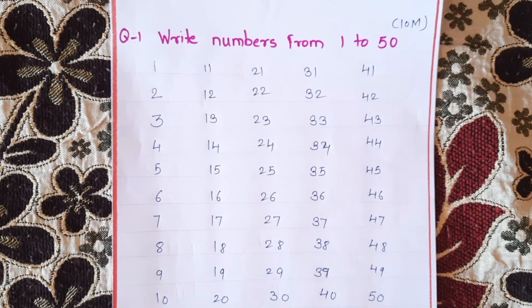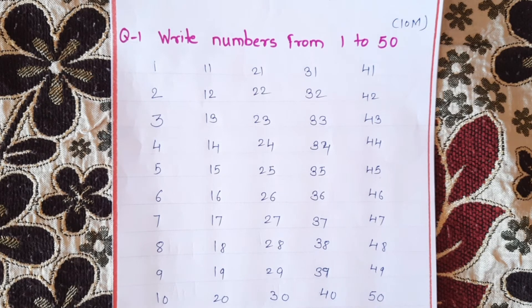If you have a number of numbers, you can find 1 to 20 numbers. You can find 1 to 30 and 1 to 50. You can find 1 to 50.